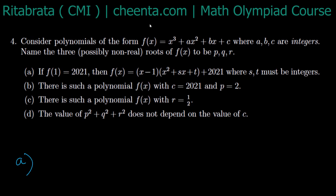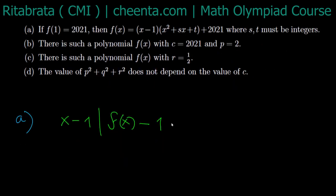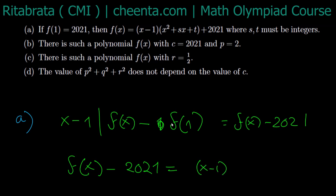For the first part, as f(1) = 2021, we have (x - 1) divides f(x) - f(1). So f(x) - 2021 is a polynomial times (x - 1). The degrees must match, so (x - 1) times some g(x). As (x - 1) is linear and f(x) is cubic, g(x) must be quadratic.